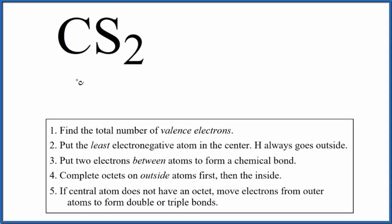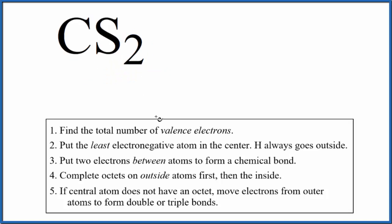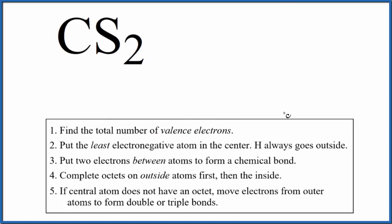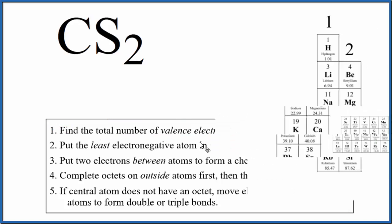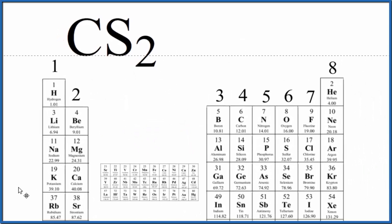Let's draw the Lewis structure for CS2, carbon disulfide. The first thing we do when we draw Lewis structures is find the total number of valence electrons. The periodic table can help us do that.